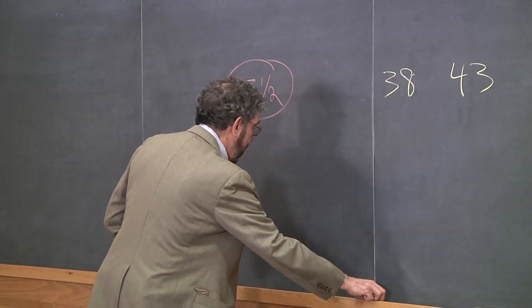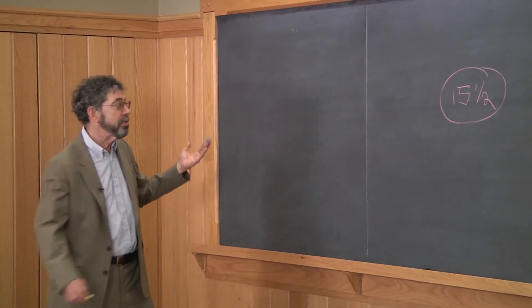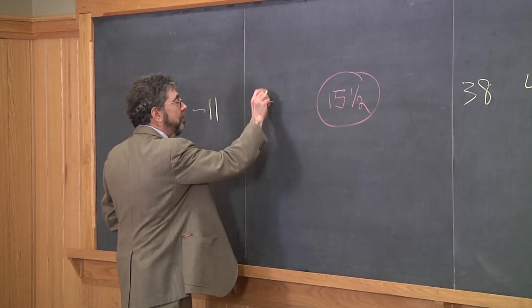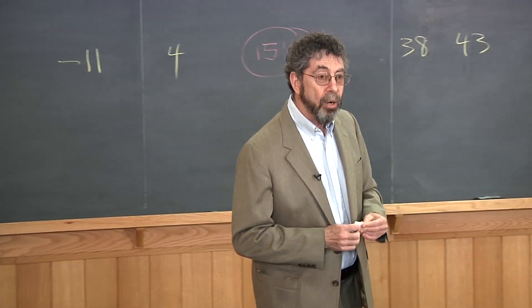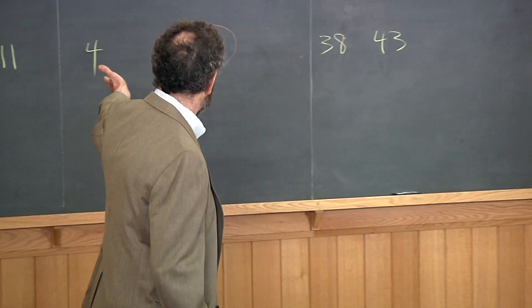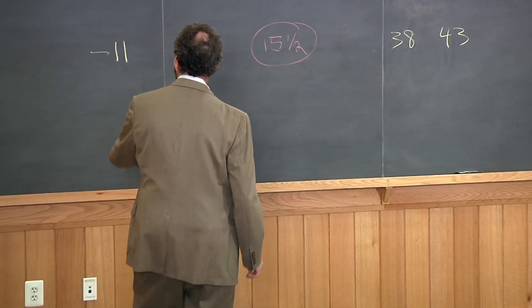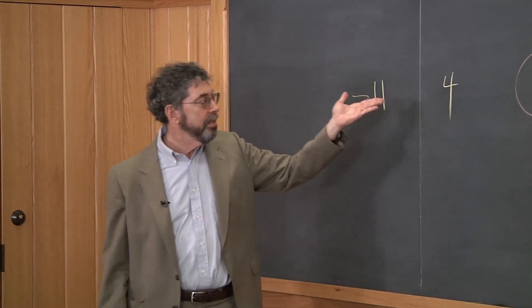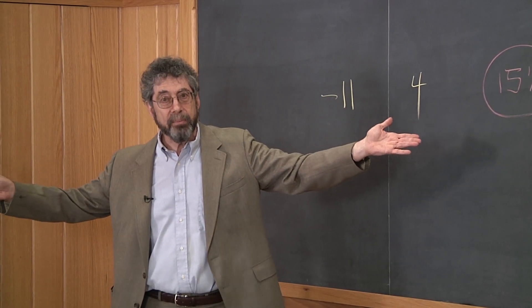Well, what other things can happen? It could be that both of the numbers were smaller than 15 and a half. For example, maybe one of the numbers is minus 11, and the other number is 4. Now, whichever number Catherine chooses, she's going to be guessing that it's the smaller number because it's smaller than her threshold. Well, if she picks minus 11, she'll be right that it's the smaller number. If she picks 4, she'll be wrong. Again, it's a 50-50 proposition.